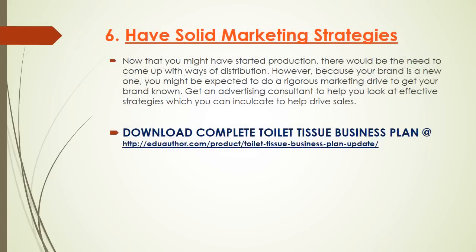Finally, have a solid marketing strategy. One major issue I've seen over the years is that it's one thing to set up a manufacturing plant and start producing toilet tissue, and another thing entirely to understand your market and have a solid marketing strategy to push the finished product into the market. Now that you have started production, there is a dear need to come up with different ways of distribution. Because your brand is new, you will be expected to do a rigorous marketing drive to get your brand known. Get an advertising consultant to help you identify effective strategies to drive sales.